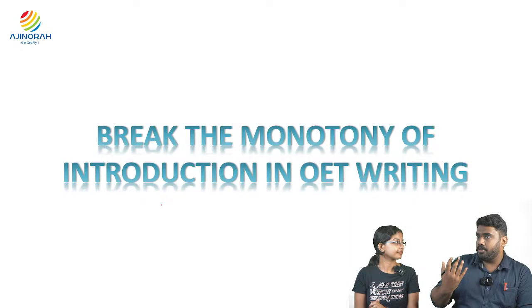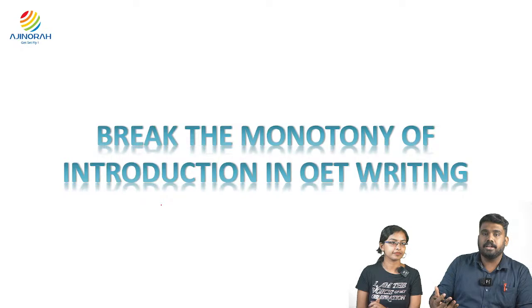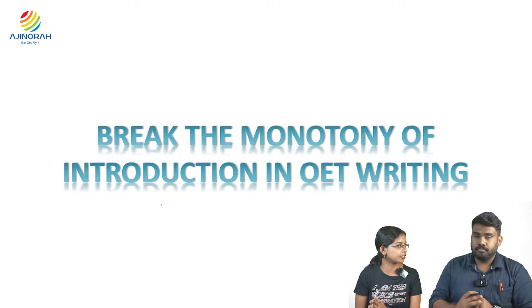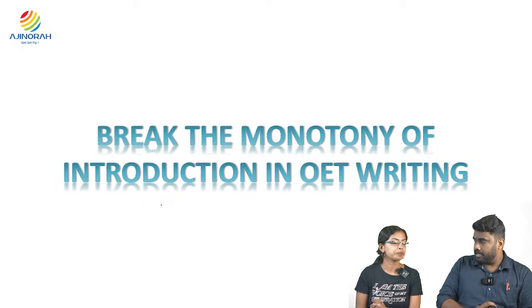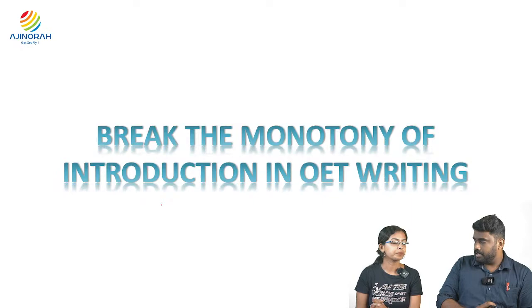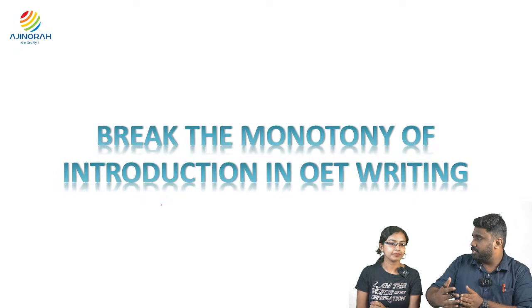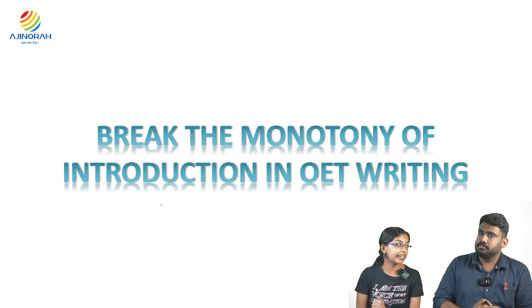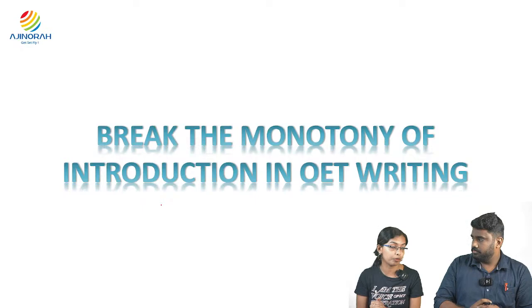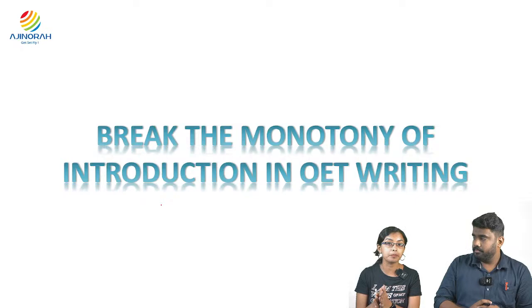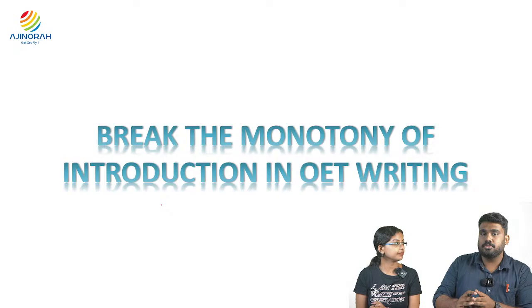Everyone is using the same kind of templates or introductions for OET writing. The mark or grade depends upon the differences we make in our letters. Before going further, we should introduce the overall writing section for new students. We will give a brief orientation regarding writing. The first five minutes are for reading time — you cannot pick up your pen or pencil during that time. Then you have 40 minutes for writing. Overall, 45 minutes: five for reading, 40 for writing. You are not supposed to use your pencil during the reading time.